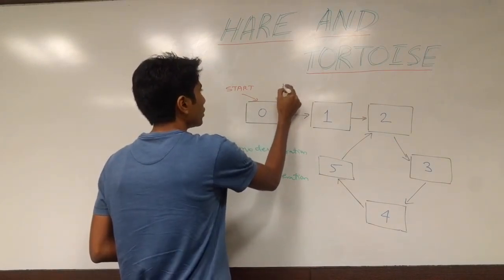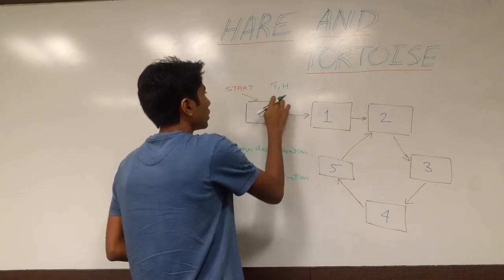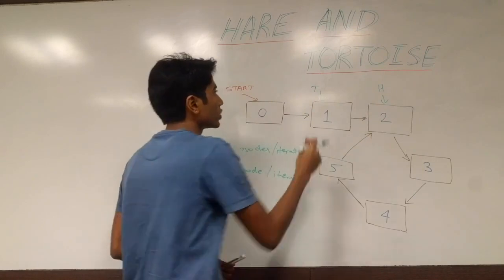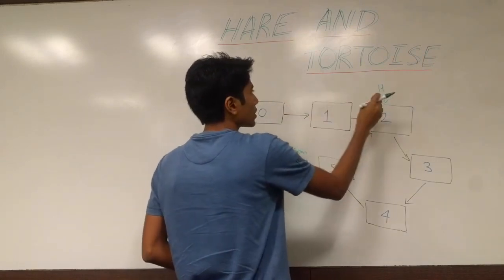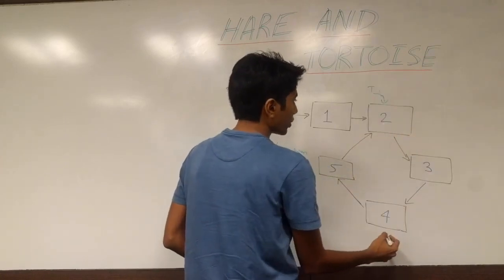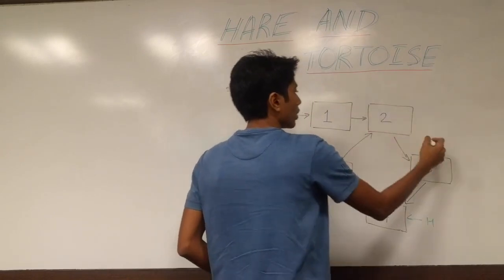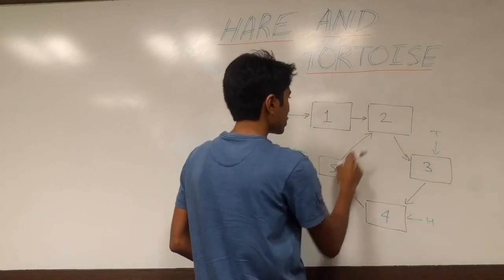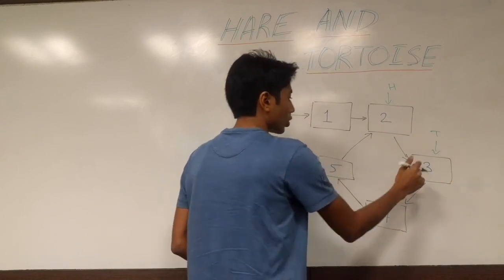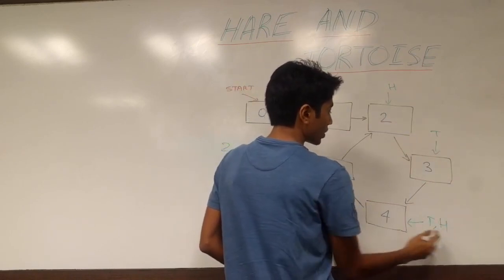The hare will be pointing at the same place as the tortoise. After one iteration, the tortoise is pointing here and the hare is over here. After two iterations, the tortoise is pointing where the hare was, but the hare is inside the loop and now it's pointing over here. After three iterations, the tortoise is pointing here and the hare is pointing here. After four iterations, the tortoise points to node 4 and the hare jumps and points along with the tortoise at node 4.